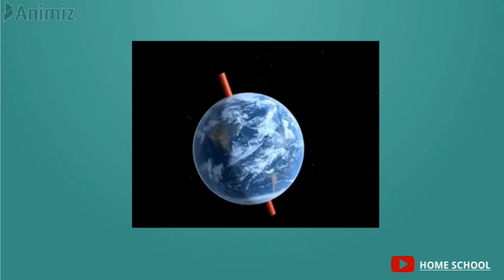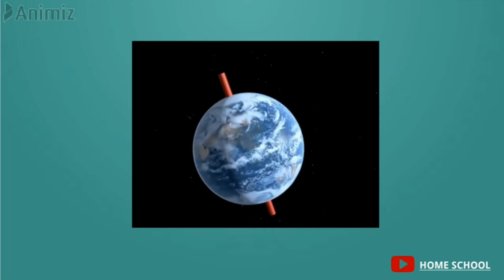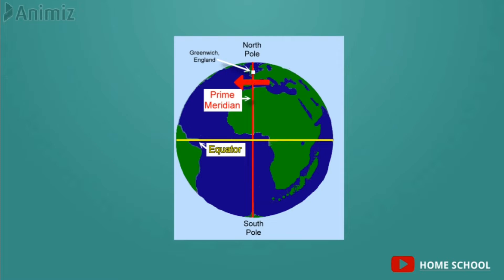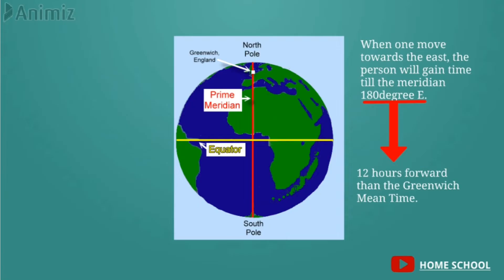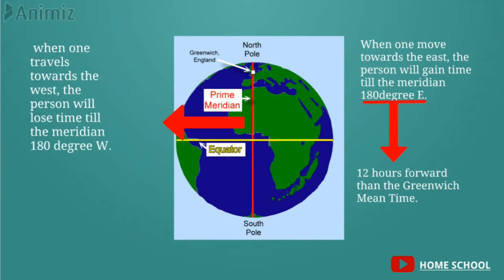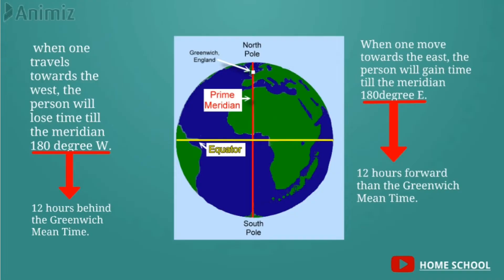The Earth moves from west to east. If you move back to the west crossing the prime meridian, you are going back in time, and if you move forward to the east crossing the prime meridian, you are advanced in time. When one moves towards the east, the person will gain time until the 180 degree east meridian, meaning they will be 12 hours forward of Greenwich Mean Time. Similarly, when one travels towards the west, the person will lose time and be 12 hours behind Greenwich Mean Time at 180 degree west.